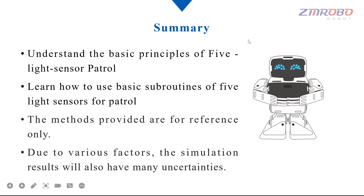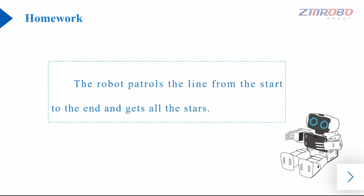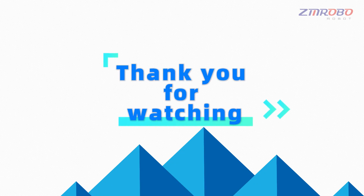At this point, we finished the class exercise. Let's summarize the content of this lesson. In this lesson, we learned the basic principles of light sensor line patrol and also the method of using basic subroutines. The methods provided in this lesson are for reference only, as there are sometimes many uncertainties in the results of the simulation due to a variety of factors. Finally, please complete this post-lesson exercise: have the robot patrol the line from the start to the end and get all the stars. That's the end of this lesson. Thank you for watching.